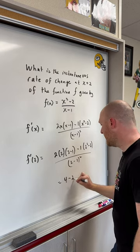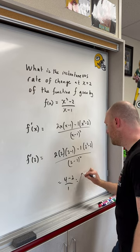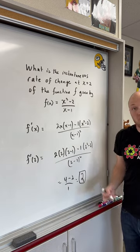Simplifying, we get 4 minus 2 over 1, which gives us 2. Pretty easy.